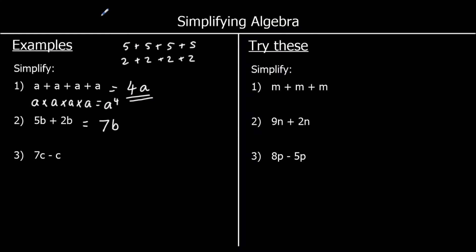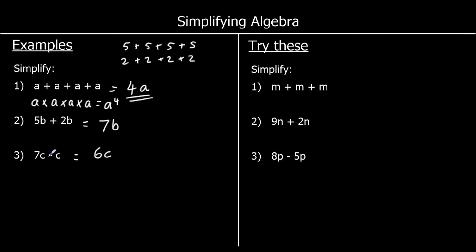We can also take away things that are the same. If you've got 7 lots of c take away 1 lot of c, you have 6 lots of c. Again if c was 10, 7 tens is 70, take away 10 is 60 — so 7c take away 1c is 6c.